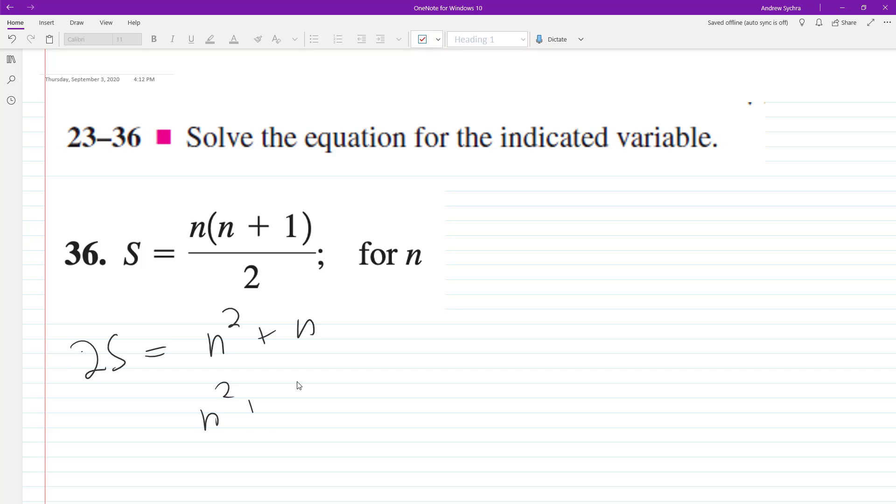Let's complete the square. We get n squared plus n plus - half of the coefficient on n squared is 1/4. So we add that to both sides.